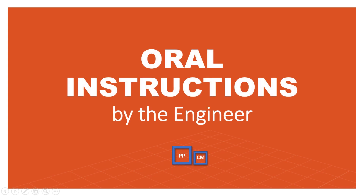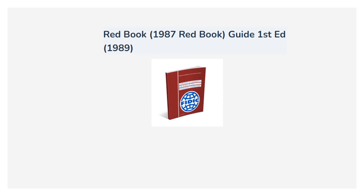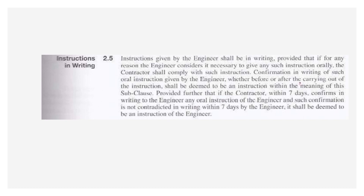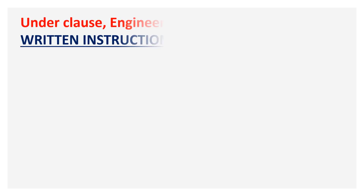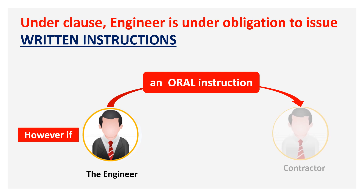Today we will discuss oral instructions by the engineer. Under the 1987 version, Clause 2.5 deals with instructions in writing. Under this clause, the engineer is under obligation to issue written instructions. However, the engineer can also issue an oral instruction to the contractor.